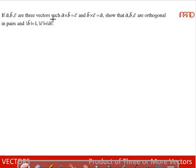If A, B, C are three vectors such that A cross B is equal to C and B cross C is equal to A, show that A, B, C are orthogonal in pairs and mod B is equal to 1, mod C is equal to mod A.